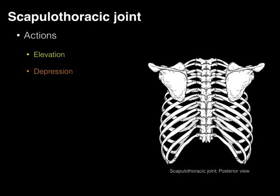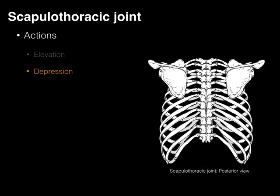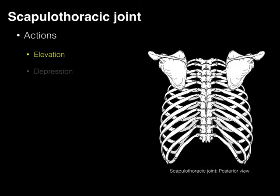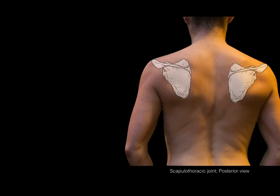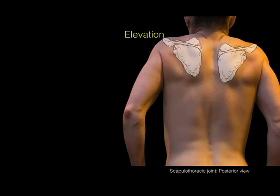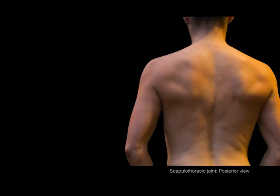Let's take a look at elevation and depression first. Elevation has the scapula go up; depression has the scapula go down. Happy, you're up; depressed, you're down. In surface anatomy, the scapulae go up when you're shrugging your shoulders like you don't know the answer to a question, and they go down when you realize the teacher didn't call on you. Elevation, depression.